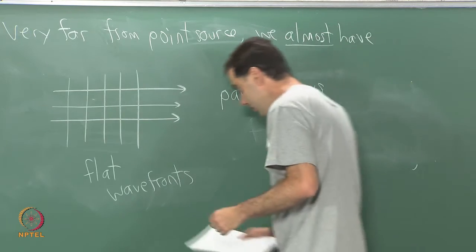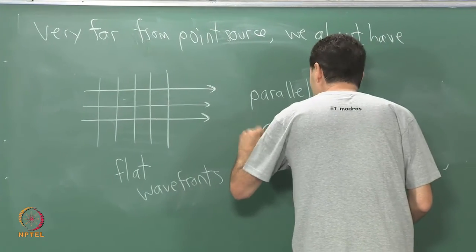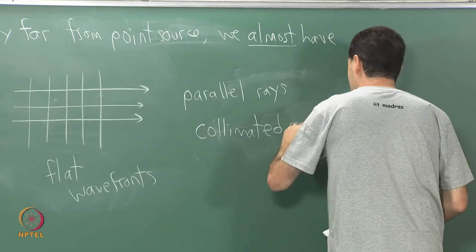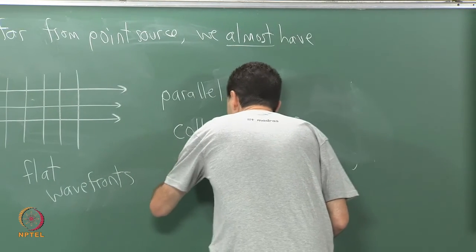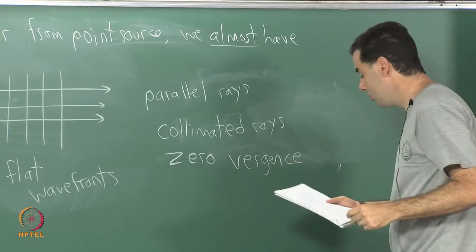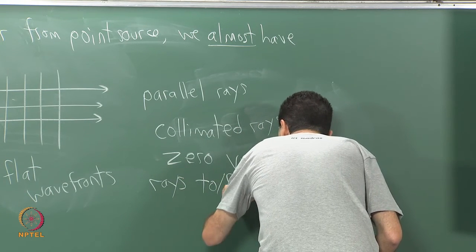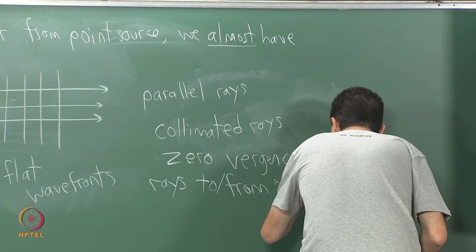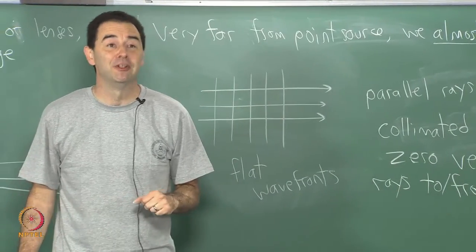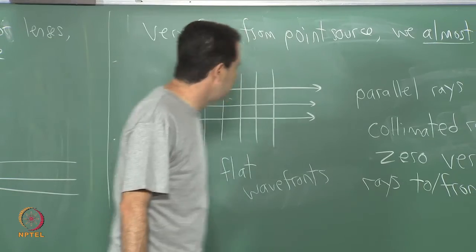There are several names for parallel rays. You can call them collimated light or collimated rays. The situation is also called zero vergence, and also rays to or from infinity, which makes sense. If you could get infinitely far away in some limiting case, the mathematical model would be correct.